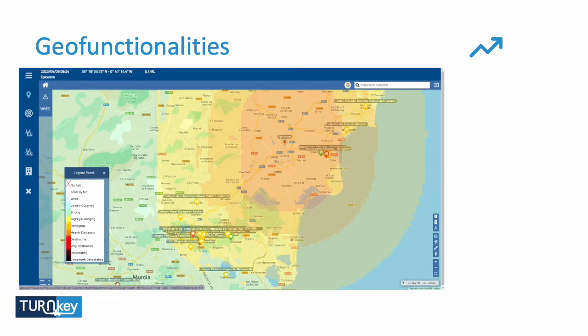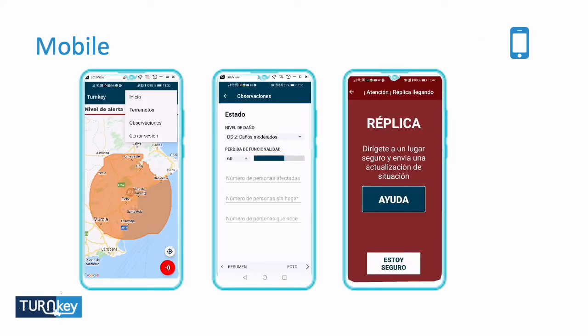Here we see the first results coming from the engine. This is an interface that tells us, from a given earthquake, what is going on. We have the intensity map, which describes the possibly damaged area. You can see they are colored red, yellow, or green — this gives information on the suspected damages that the infrastructure has sustained, so I can get a picture of what is going on.